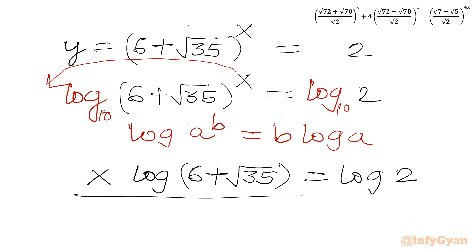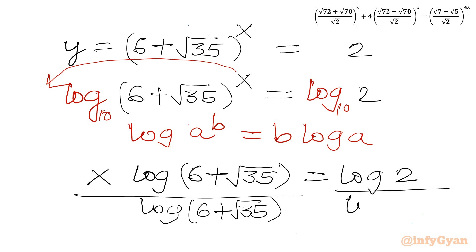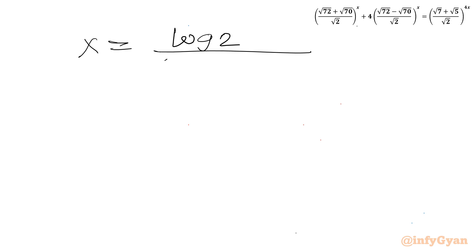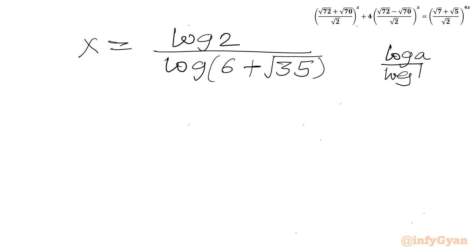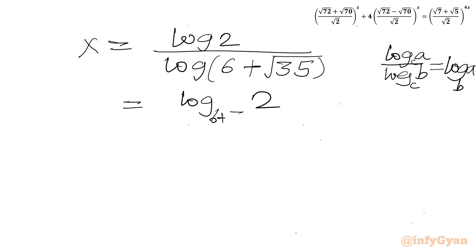Dividing both sides by log(6 + √35), we get x = log 2 / log(6 + √35). Using the change-of-base identity log(a)/log(b) = log_b(a), we can write the answer as x = log_(6+√35)(2). This is our exact answer.